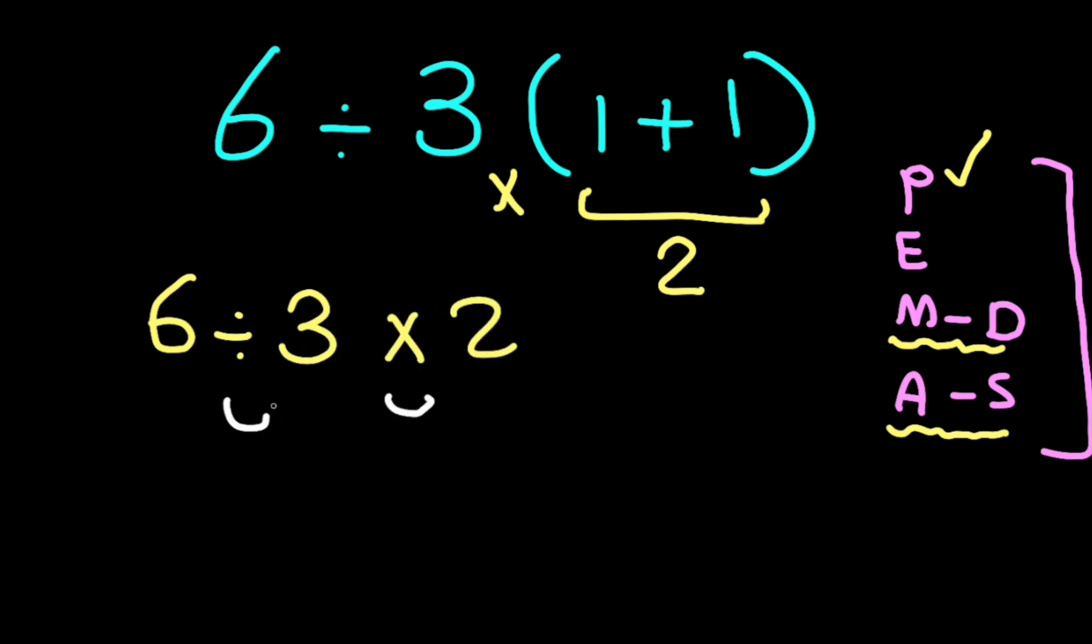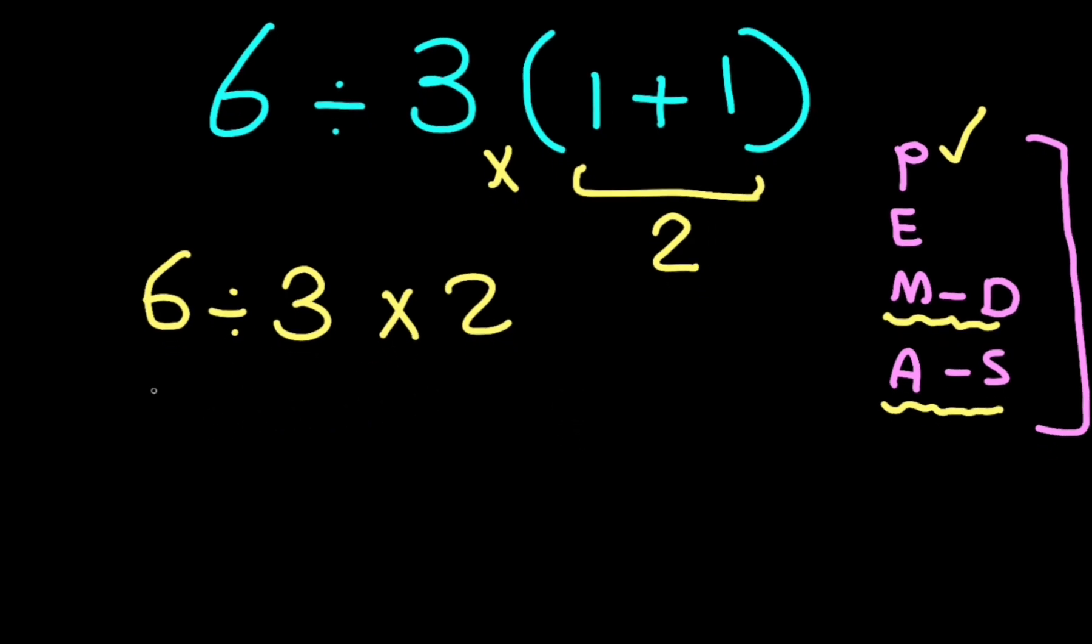Now we have one multiplication and one division, and as we know according to the PEMDAS, multiplication and division have equal priority, so we have to solve from left to right. Now 6 divided by 3 gives us 2.